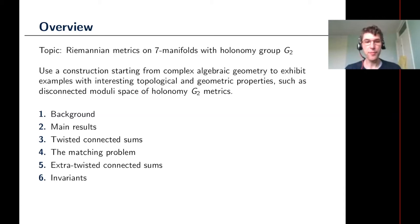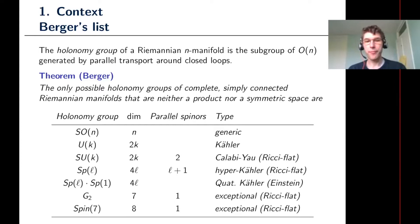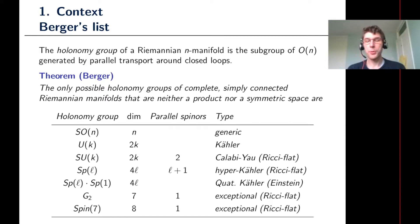Starting with the context for the talk: if you have a Riemannian metric on an n-dimensional manifold, then you can consider the action of parallel transport around closed loops — parallel transport by the Levi-Civita connection of the Riemannian metric. If you take parallel transport around all closed loops based at a particular point, that gives you what's known as the holonomy group. For a generic metric you will get any element of O(n) or SO(n) depending on whether the manifold is orientable or not.